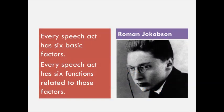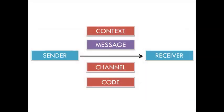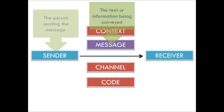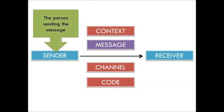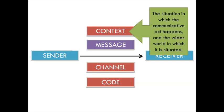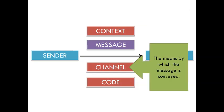One of the first people to analyze this was a linguist named Roman Jakobson. Jakobson argued that every communicative act had six basic elements, or factors. There's a message, text, or information being conveyed, a person sending the message, a person receiving the message, the situation in which the communicative act happens, and the wider world in which it's situated, which is called the context. The means by which the message is conveyed is the channel.